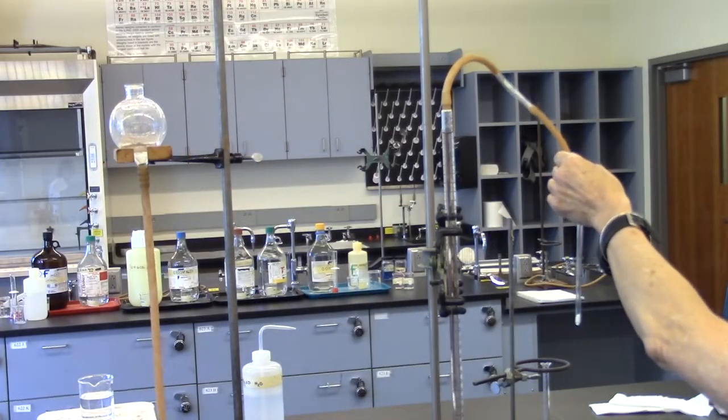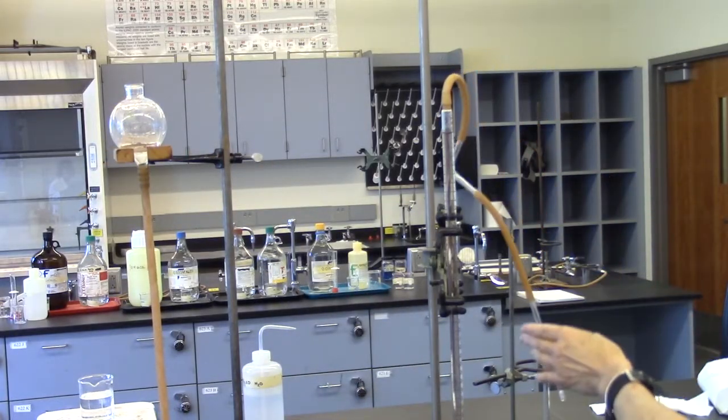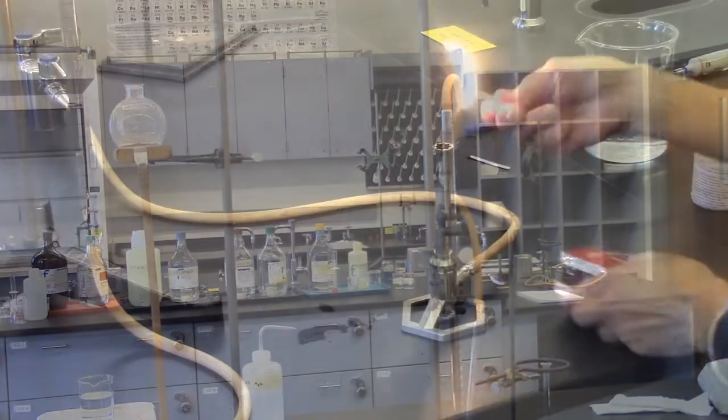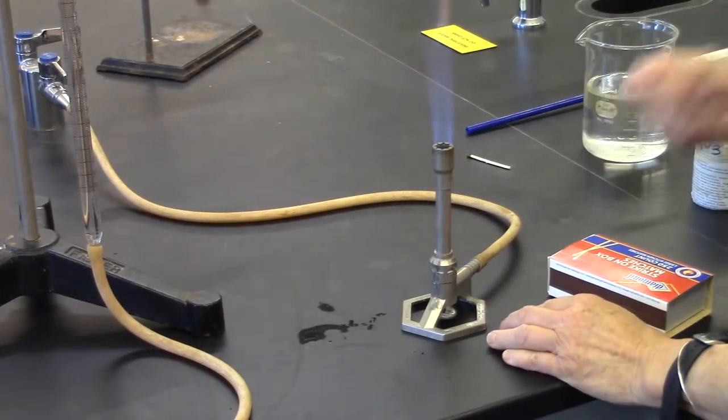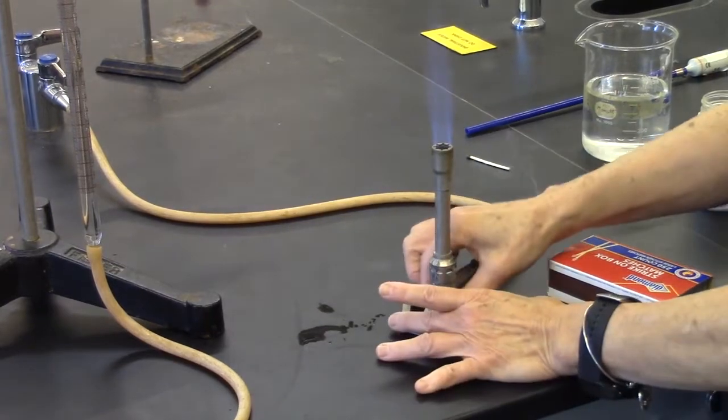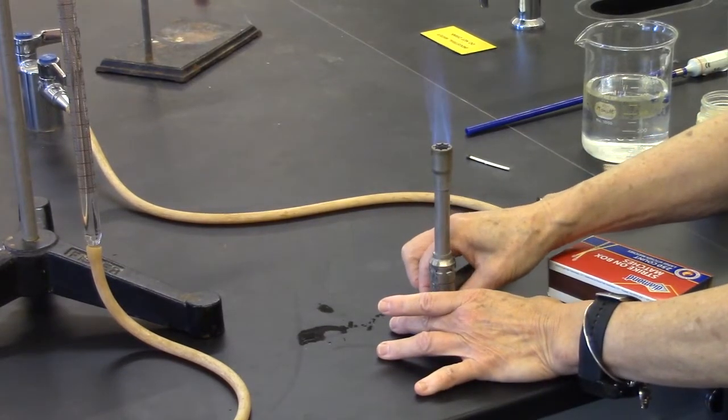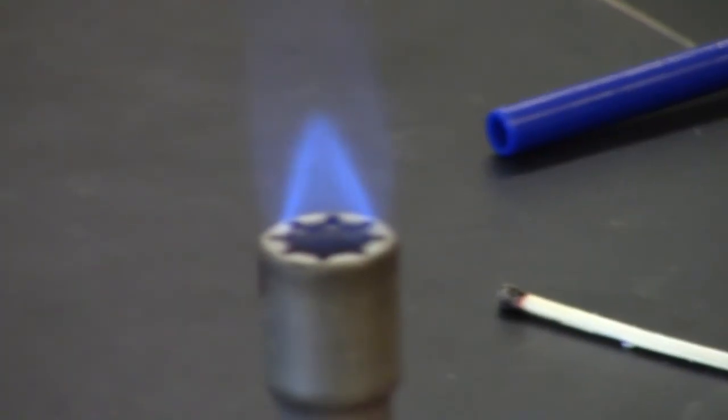Before heating, take a look to see that the funnel support and burette holder will not be in the way. Light the Bunsen burner. A small hot flame will do. Remember, the tip of the inner cone is the hottest part of the flame.